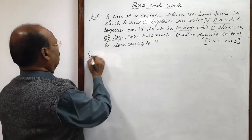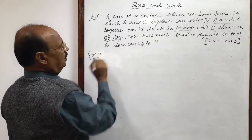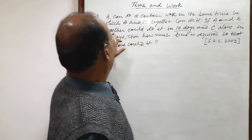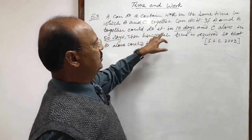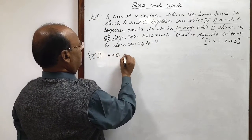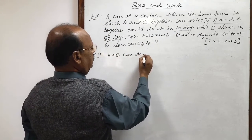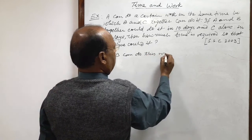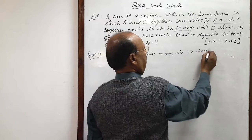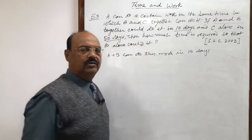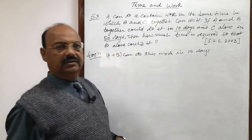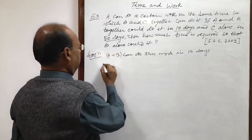Let us see the solution here. We will start with this statement. A and B together could do it in 10 days. So A plus B can do this work in 10 days. First of all we will find the amount of work done by A plus B in 1 day.